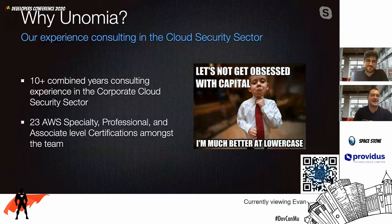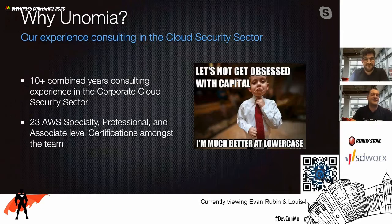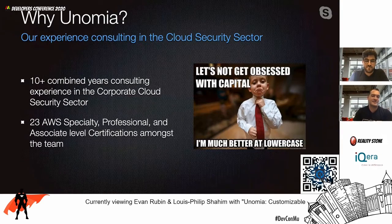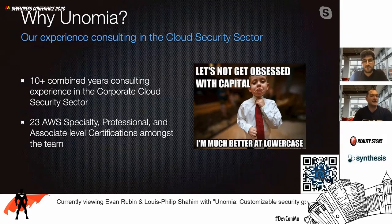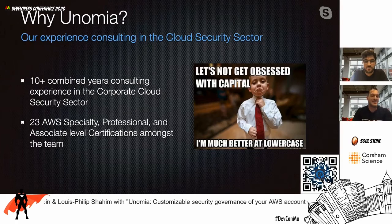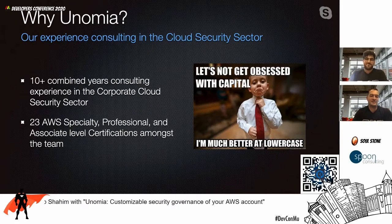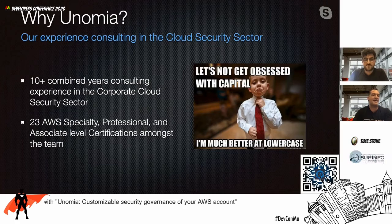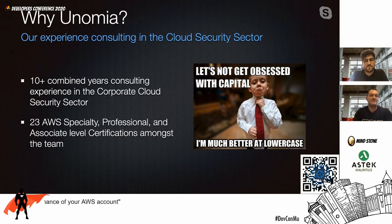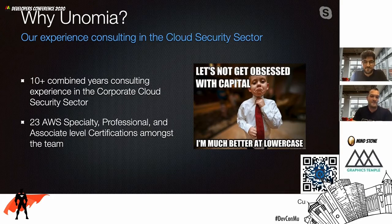Now that you've seen what the team looks like, let's take a second to brag a little. The team is highly experienced in the corporate cloud security front, with over 10 combined years of experience. We have 23 AWS certifications between us, ranging from associate, professional, as well as security specialty level certifications — and plenty more in the pipeline. The initial stages of Unomia were treated as a bit of a skunkworks project, with many evenings and weekends spent hacking away at the foundations of this tool.